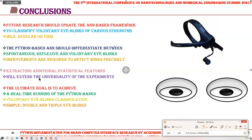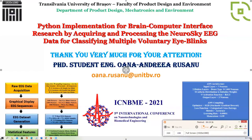It resulted in the generation of a training dataset containing 3,000 recordings evenly distributed for detecting simple, double, and triple voluntary eye blinks, involving extraction of seven statistical features from the raw EEG signal. Future research should update the ANN framework to classify voluntary eye blinks of various strengths (mild, regular, or firm), differentiate between spontaneous, reflexive, and voluntary eye blinks, detect winks precisely, and extract additional statistical features. The ultimate goal is to achieve real-time running of the Python-based voluntary eye blink classification. Thank you very much for your attention.